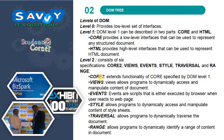DOM has four levels: level 0, level 1, level 2, and level 3. Level 0 provides a low-level set of interfaces. Level 1 can be described in two parts: Core and HTML. Core provides low-level interfaces that can be used to represent any structured document. HTML provides high-level interfaces that can be used to represent an HTML document.